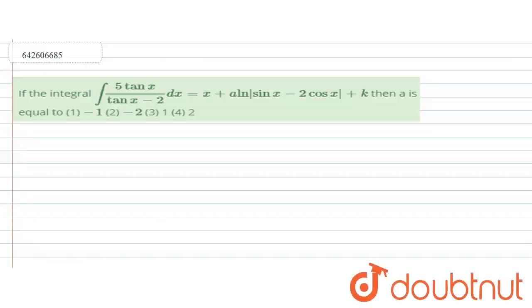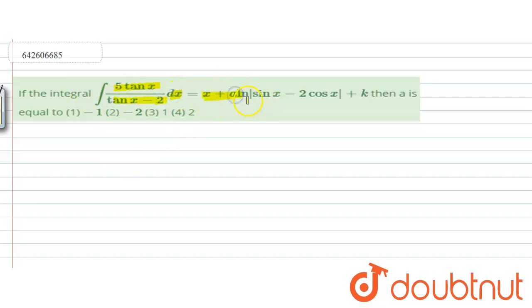Hello everyone, let's start the question. The question says: if the integral of 5 tan x upon (tan x minus 2) dx equals x plus a·log|sin x minus 2 cos x| plus k, then a is equal to?